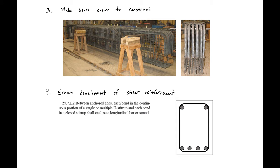The next reason we want to use compression steel is it makes our beam easier to construct and makes our reinforcement cage more sturdy. Here's a reinforcement cage from an inverted T beam: six number 11 bars at the bottom and twelve number 11 bars at the top, combined with stirrups in both directions, makes a very sturdy reinforcement cage that's easier to build than if we only had one layer of steel.